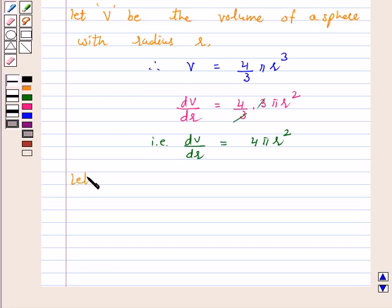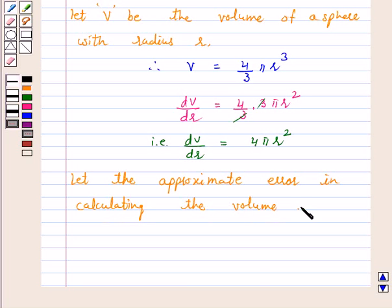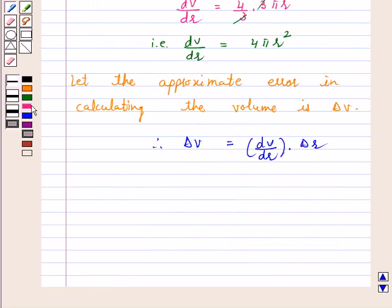Let the approximate error in calculating the volume be delta V. Therefore, delta V is equal to dV by dr into delta r, which equals 4 pi r square into delta r. This is equal to 0.08 pi r square.